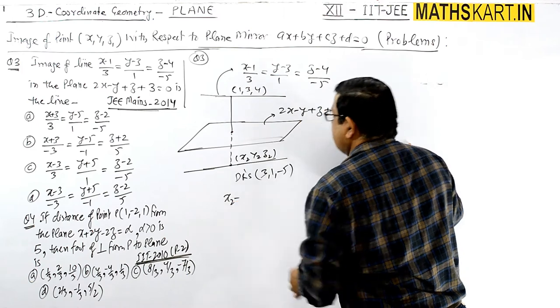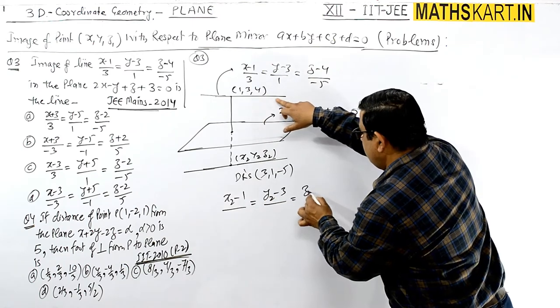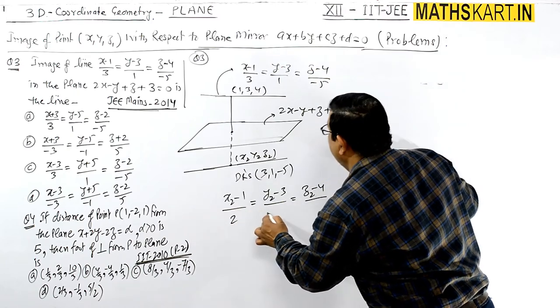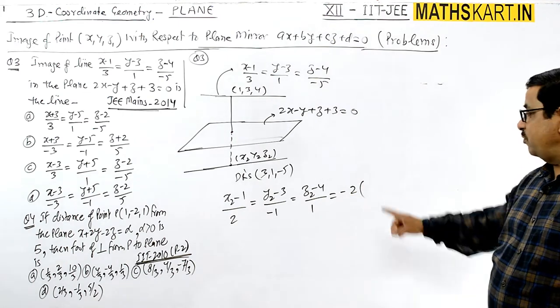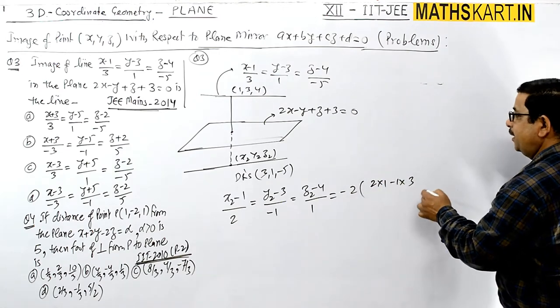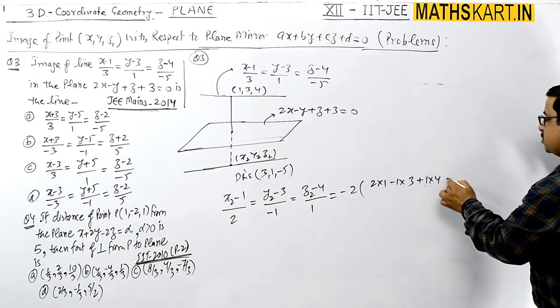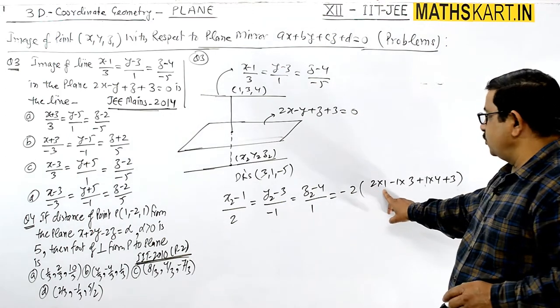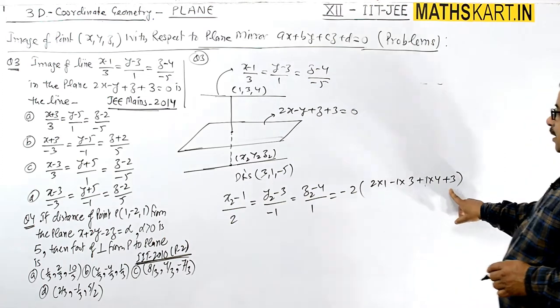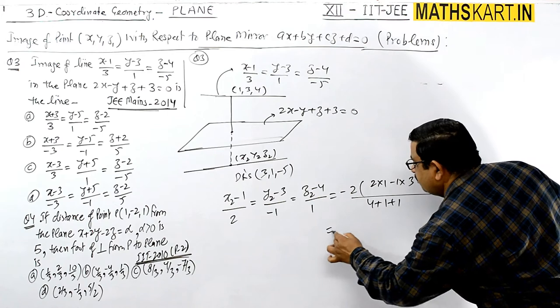We just have to find out the image of this point. Let me take its coordinates as x2, y2, z2. So (x2 - x1)/1, where the given point is 1, equals (y2 - y1)/3 equals (z2 - z2)/4. Here the plane's DRs come: equals 2, -1, and 1, equals -2 times. We have to place that point in the plane.